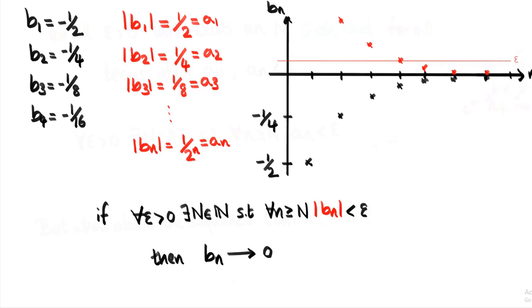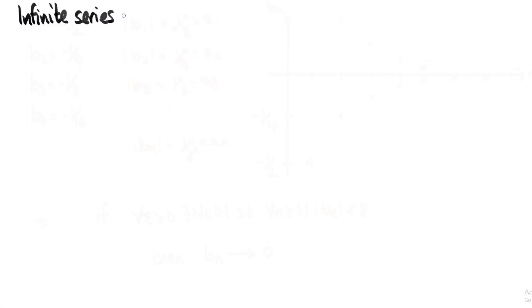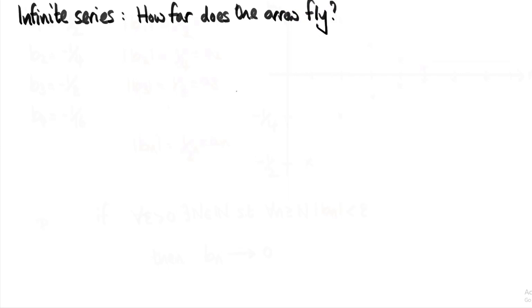With this definition of convergence to zero, let's explain what a series is. A series is just a fancy way of saying a sum, and an infinite series is an infinite sum. A good way of producing an infinite sum is with the question: how far does the arrow fly in total? It starts off by traveling half the distance, then a quarter, then an eighth, then a sixteenth, and so on. We want to add up all these terms to find out how far the arrow travels in total. But we know there are infinitely many of them, so what we're trying to do is add up infinitely many numbers together — and that's clearly impossible to do physically.